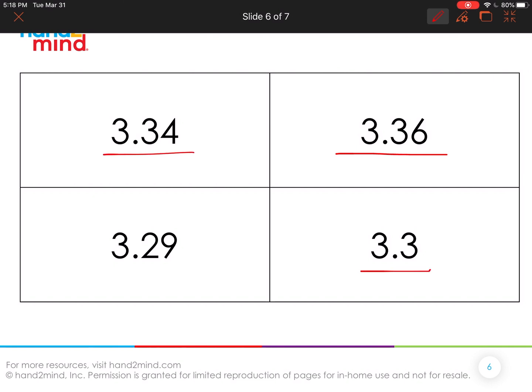This one, when we round it, that four is going to tell us that we're going to, and where it would be placed on a number line, it would be closer to three and three tenths.